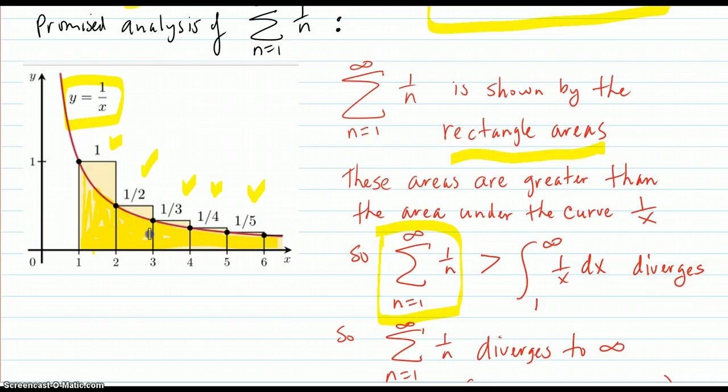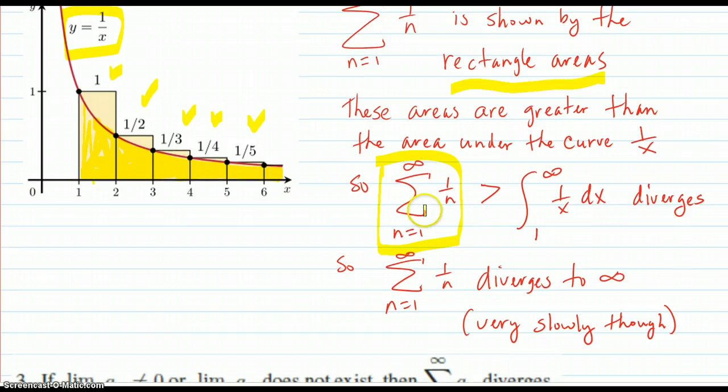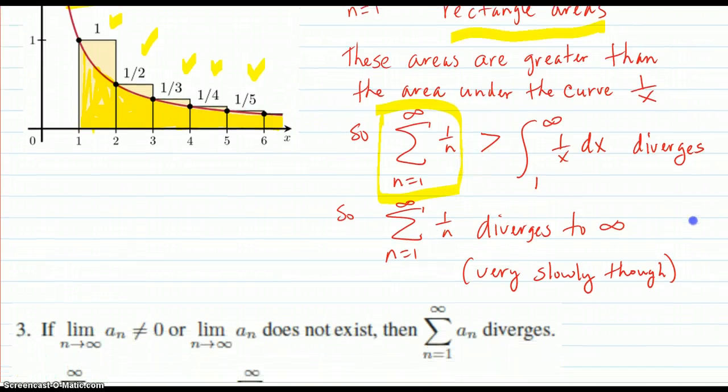And it diverges because that area doesn't dive down fast enough, so the area adds up to infinity. Our series is greater than something that adds up to infinity. That means it diverges also, even though it's very slow.